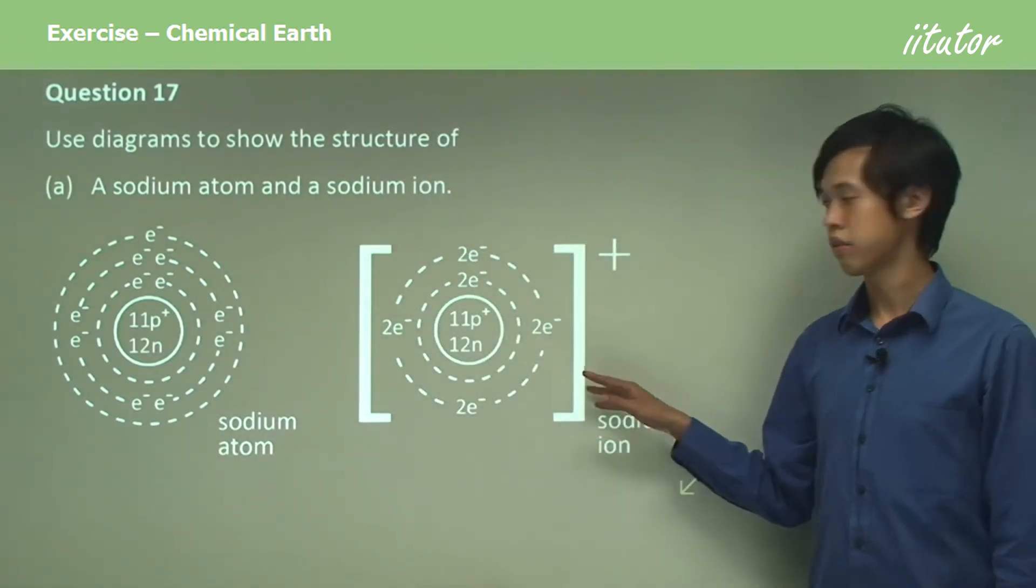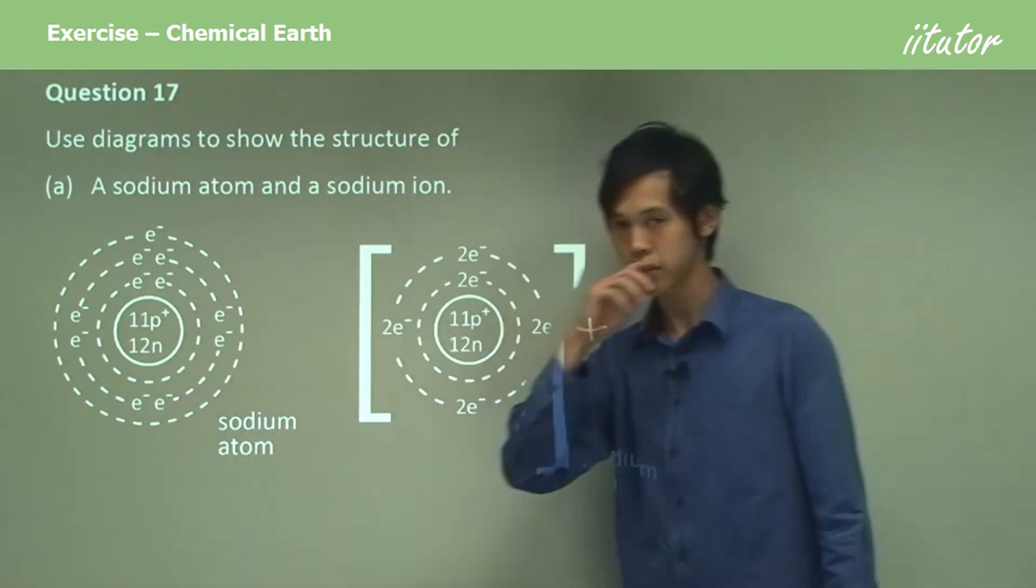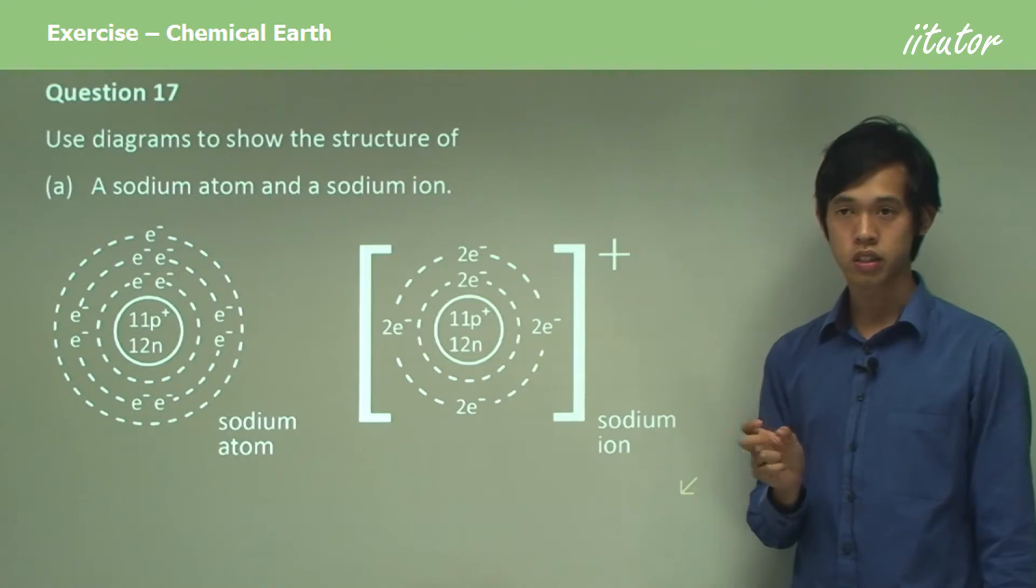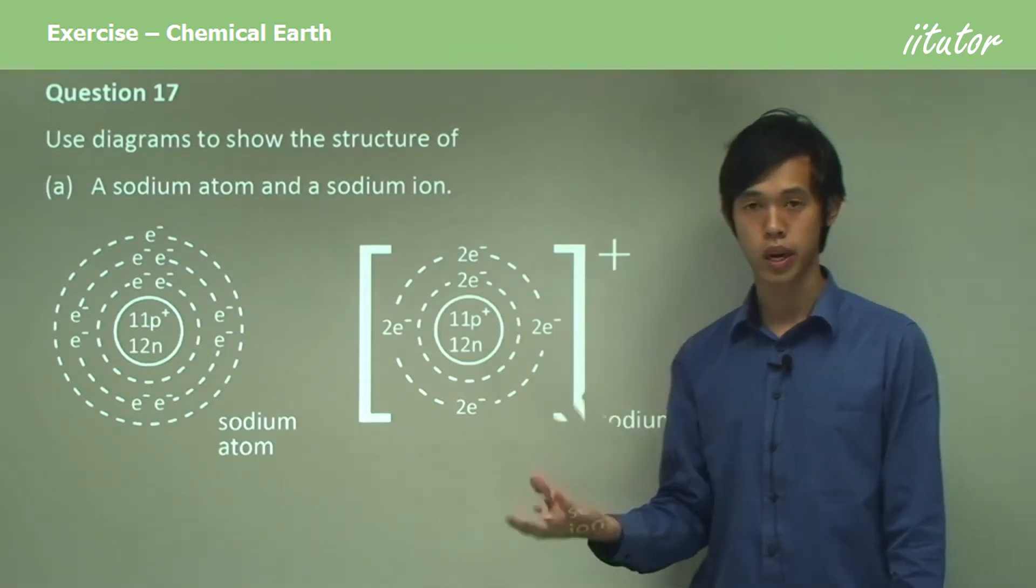But with the sodium ion, you can see that the nucleus hasn't changed at all. You still have two electrons in the inner shell, you still have eight electrons in the second shell. But you can see there's no longer the third shell, which had one electron, because it gave it away.